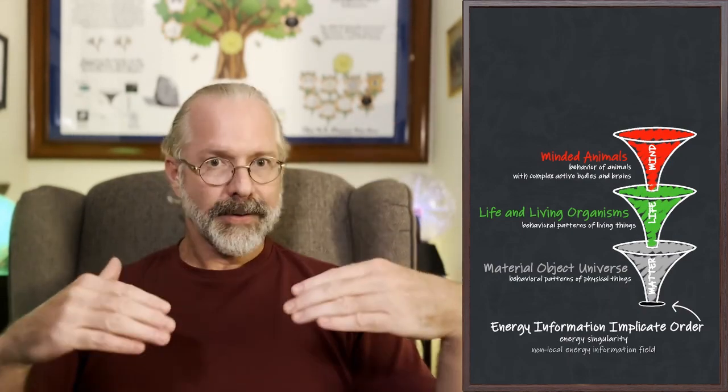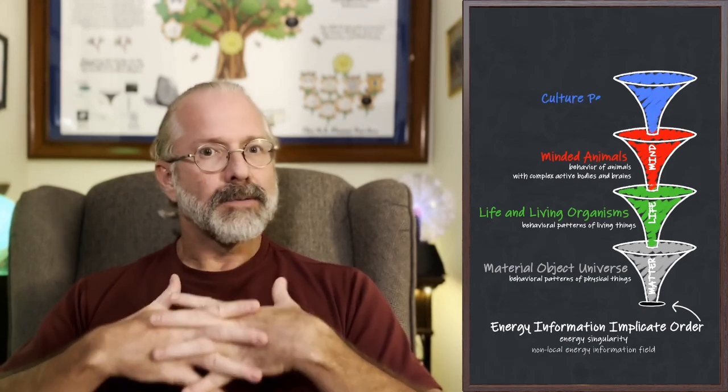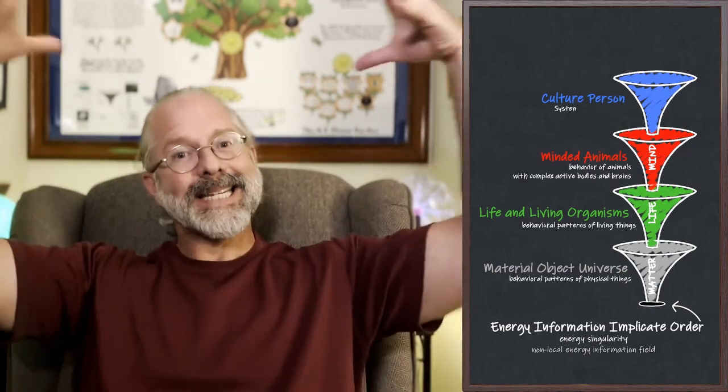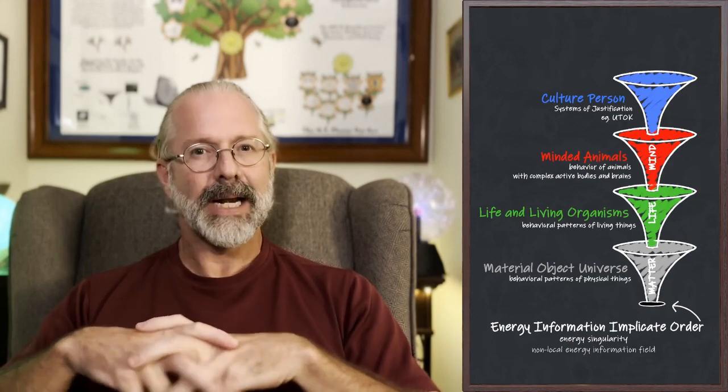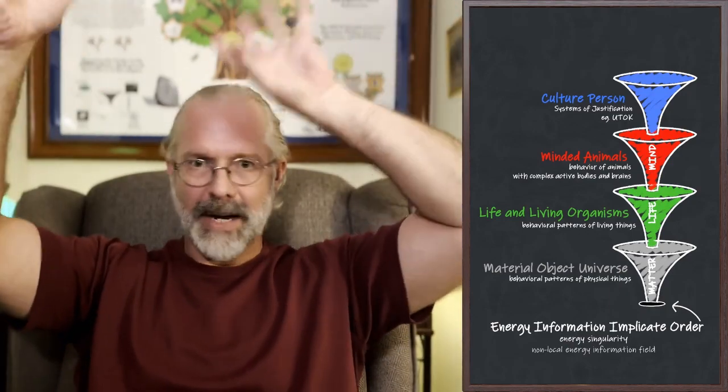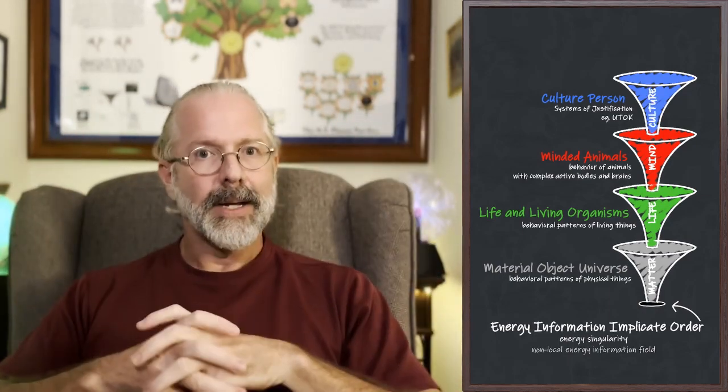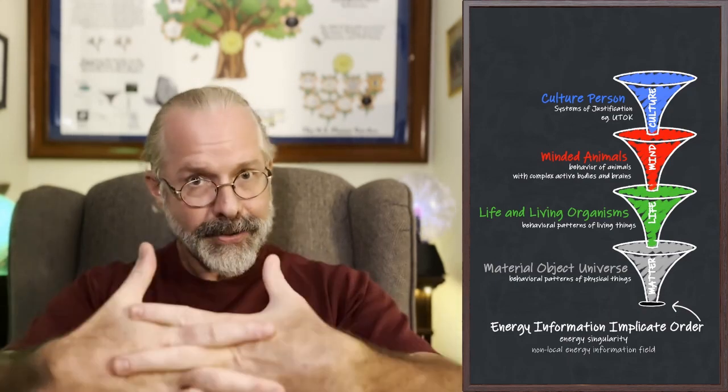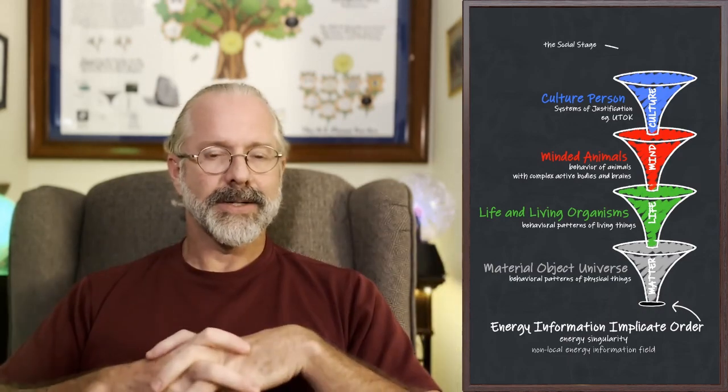Indeed, after the minded animal plane, we get the plane of cultured persons. The plane of cultured persons involve self-conscious reasoning, talking, and systems of justification. Well, like You Talk itself is a system of justification, meaning a network of propositions and definitions that define and legitimize what is and ought. Indeed, capital C culture is defined in You Talk as these large-scale systems of justification, and persons are entities that enter systems of justification, self-consciously reflect, and justify their actions on the social stage.